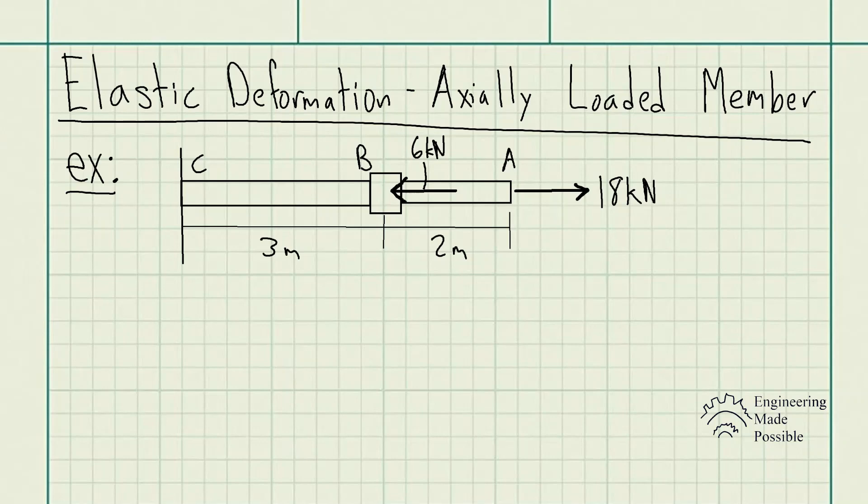For this problem, the problem statement is: the assembly consists of a steel rod CB and an aluminum rod BA, each having a diameter of 12 millimeters. If the rod is subject to the axial loadings at A and at the coupling B, determine the displacement of the coupling B and at the end A. The unstretched length of each segment is shown in the figure.